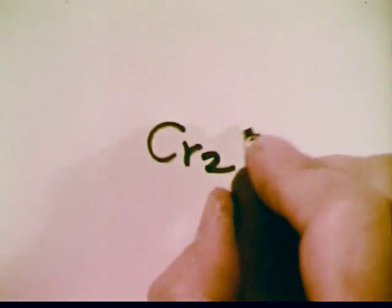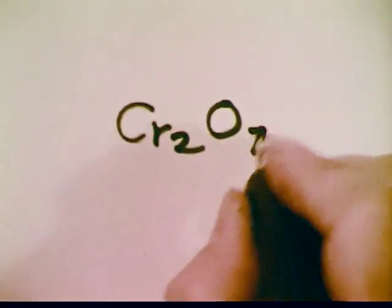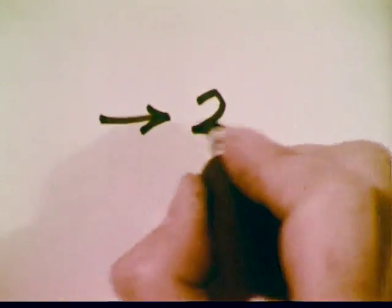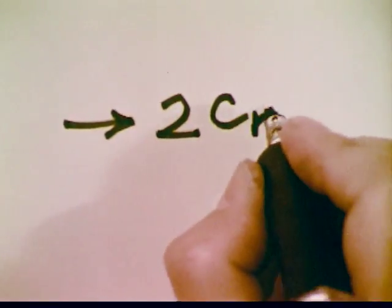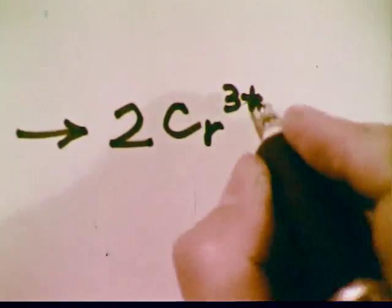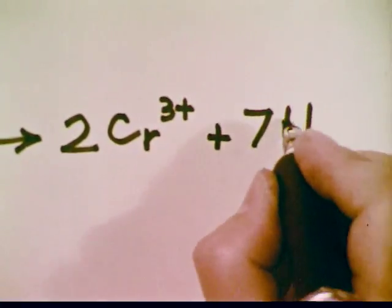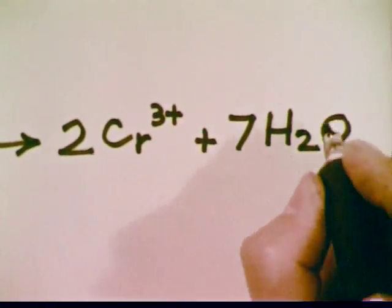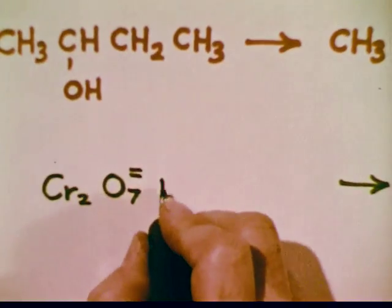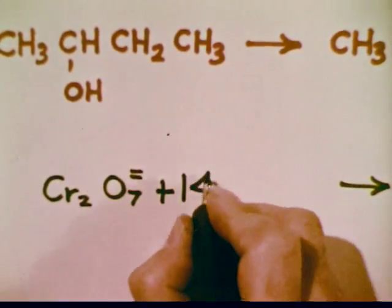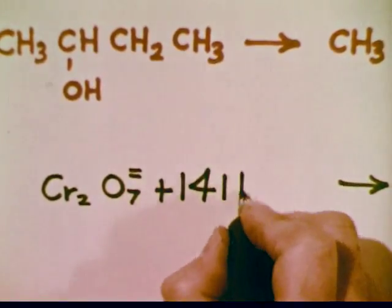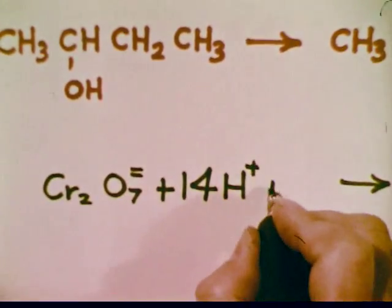The oxidizing agent is dichromate ion. The dichromate ion is reduced in the reaction and forms tri-positive chromic ion, plus water. In order to balance this half-reaction, we need 14 hydrogen ions and 6 electrons.